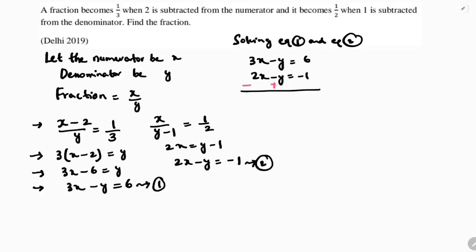Minus minus will become plus. 3x minus 2x is 1x. Minus y and plus y will get cancelled. 6 plus 1, which is 7. So, the value of x is 7.